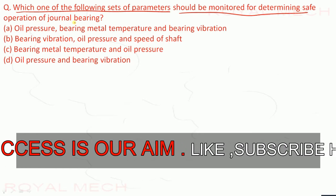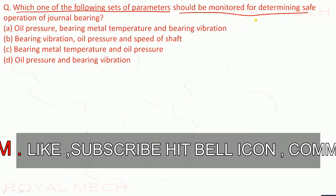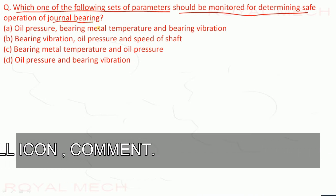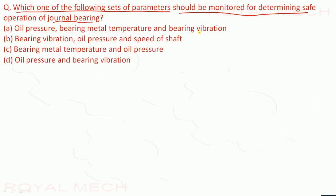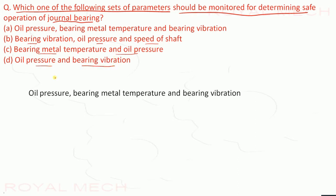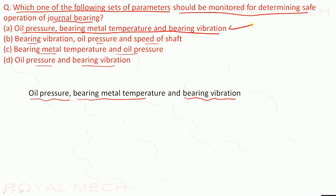Which set of parameters should be monitored for safe operation of a journal bearing? The given options include oil pressure, bearing metal temperature, bearing vibration, and speed of shaft. Oil pressure, bearing metal temperature, and bearing vibration are the key factors. Therefore option A — oil pressure, bearing metal temperature, and bearing vibration — is the correct answer.